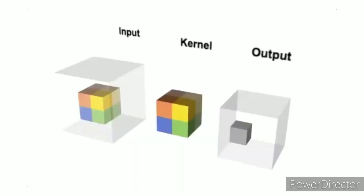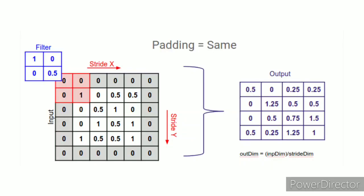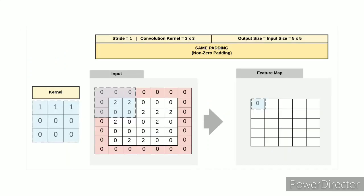What is padding? The process of adding zeros around the edges of the image is called padding. When convolution is done the output image reduces in size, and sometimes we need the output image to have the same size as the input image, so padding is done for that purpose.